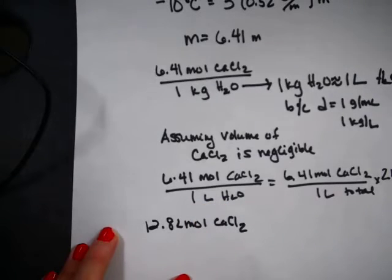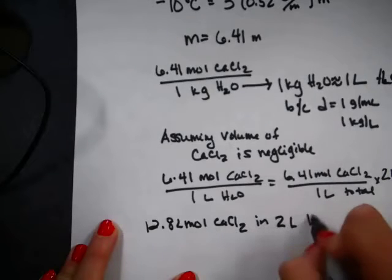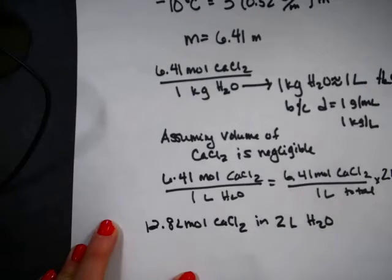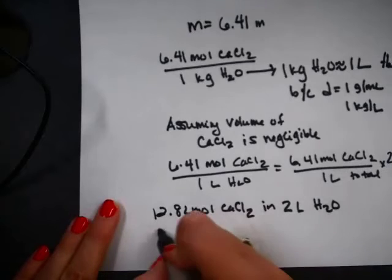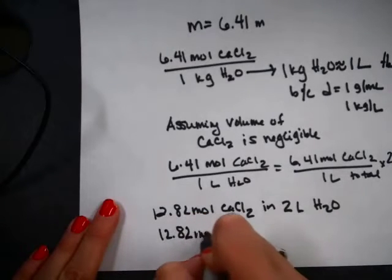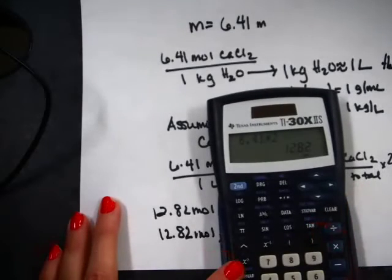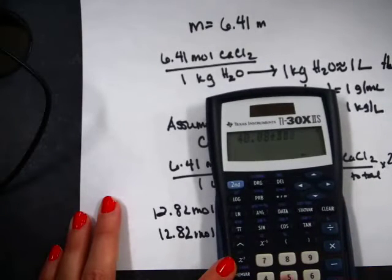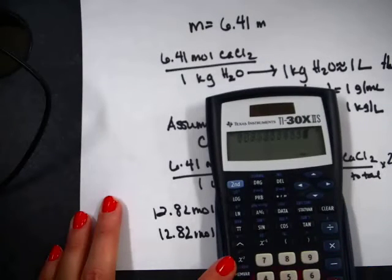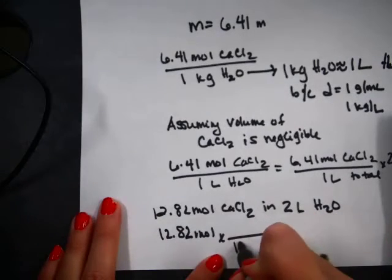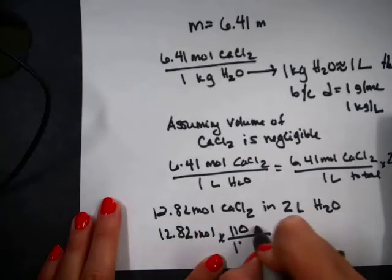I can't really measure moles, so I will go ahead and convert that to grams using the molar mass of calcium chloride. I just add up the mass of calcium and two chlorines, and I get 110.98, or about 110.